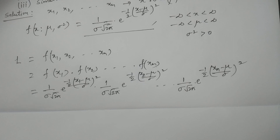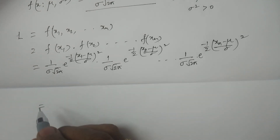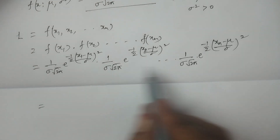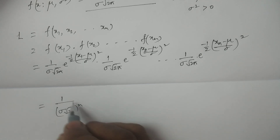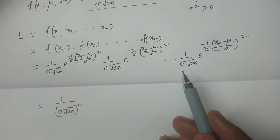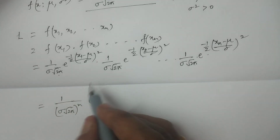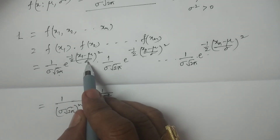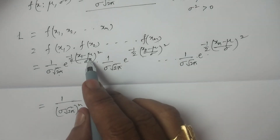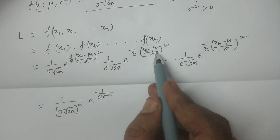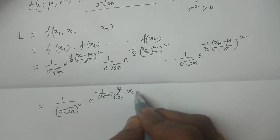Multiplying these functions together, the likelihood function becomes L = (1 / σ√(2π))^n × e^(−(1/(2σ²)) × Σᵢ₌₁ⁿ (xi − μ)²), where the exponent contains the summation of (xi − μ)² for i = 1 to n.